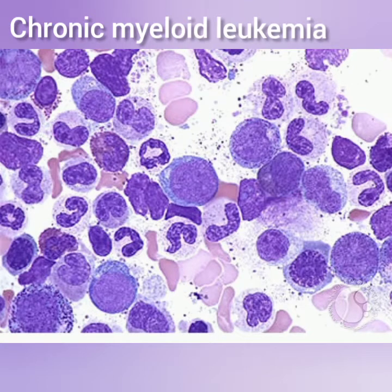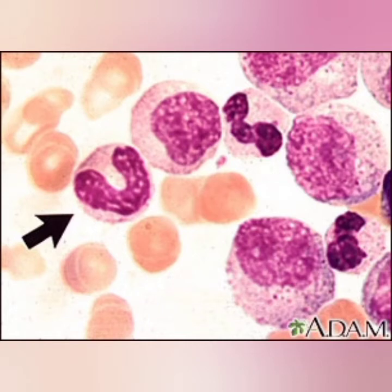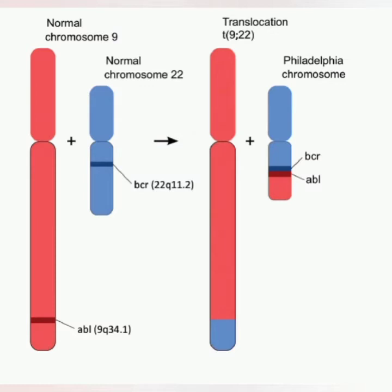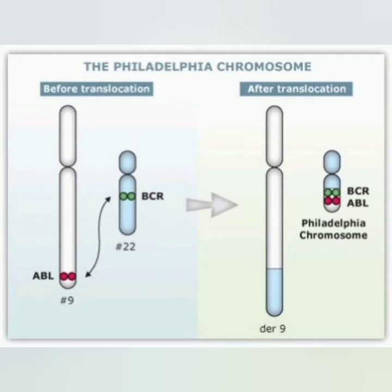CML, or chronic myeloid leukemia, is one of the first cancers to be linked with genetic abnormalities. CML is the best example for reciprocal translocation. The reciprocal translocated chromosome is known as the Philadelphia chromosome, named because it was discovered in 1960 by Peter Nowell and David Hungerford at the Cancer Fox Research Institute in Philadelphia.